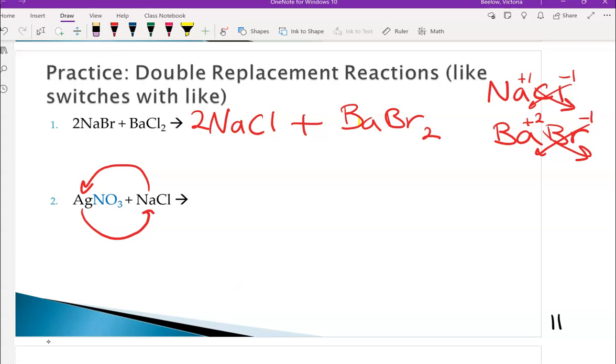So the Na is now going to be with the NO3. That's a polyatomic ion. Make sure you can recognize those. And then Ag is going to be with Cl. So just write what elements or polyatomic ions in this case go together.